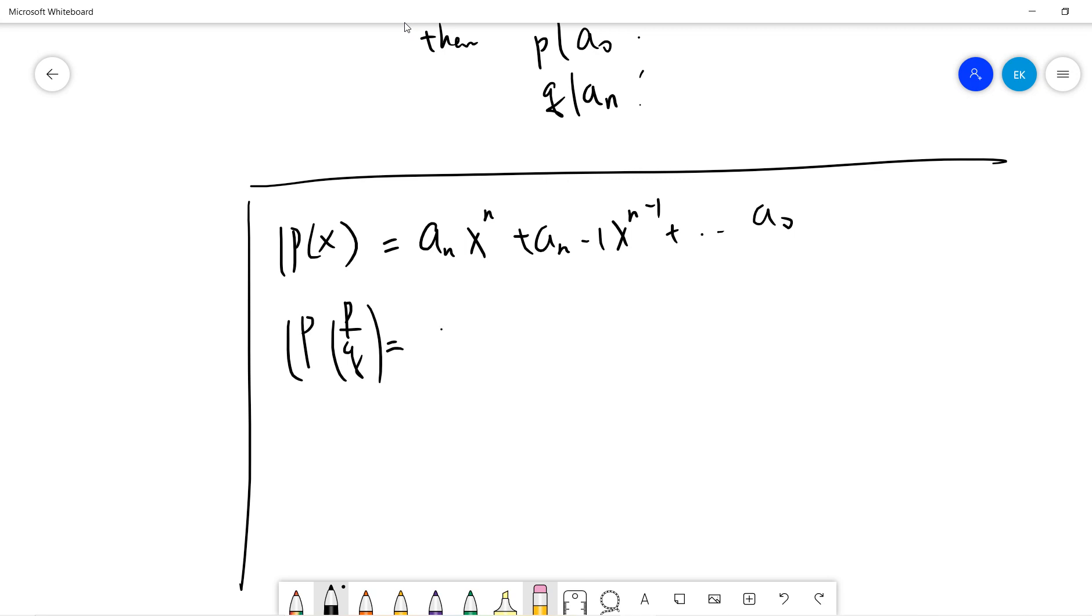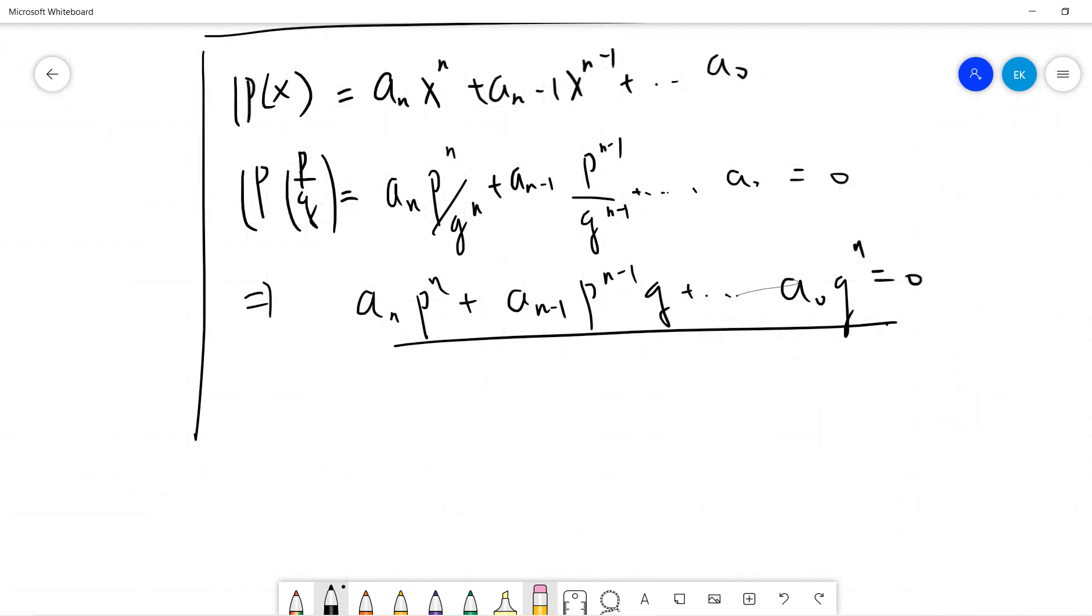Let's say p(x) is basically an*x^n + an-1*x^(n-1) + ... + a0. If we plug in x equals p/q, then we get an*p^n/q^n + an-1*p^(n-1)/q^(n-1) + ... + a0. We know that equals zero.